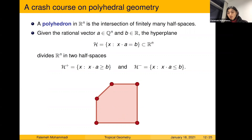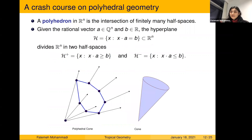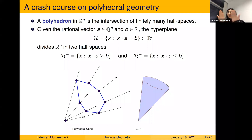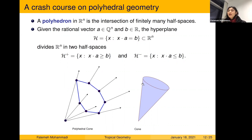Polyhedrons can be unbounded — for example, a polyhedral cone, which can be seen as the intersection of several half-spaces forming the boundary of the cone. A pointed cone has the origin as its vertex. An ice-cream cone, by contrast, cannot be written as the intersection of finitely many half-spaces because of its round boundary.